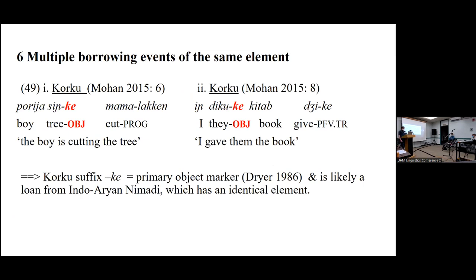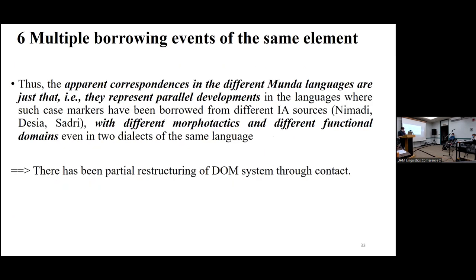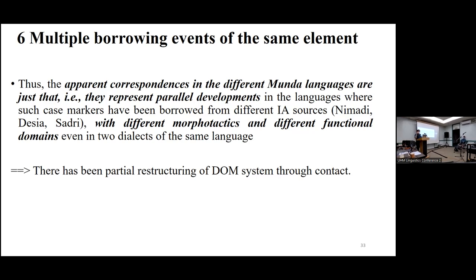Lastly, Korku has the same -ke. It also has a primary object pattern, but the language it borrowed from is Nimadi — yet another different Indo-Aryan language. So what we can conclude is that the apparent correspondences with these -ke markers are not old — they are parallel, separate innovations in different languages that happened at different times. Overall, there has clearly been a partial restructuring of the differential object marking system in various language-specific ways that happened through language contact.